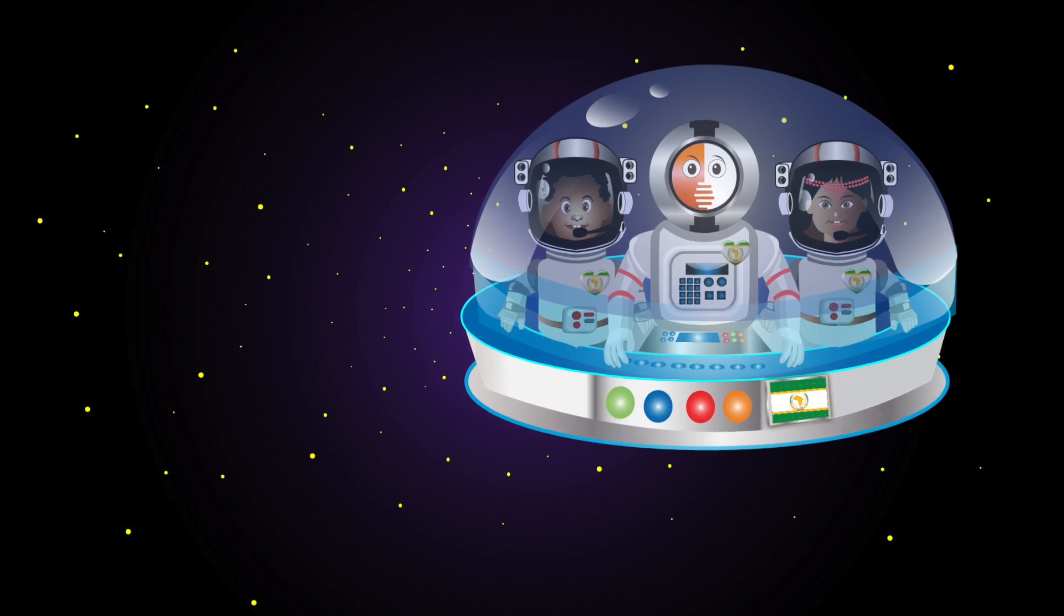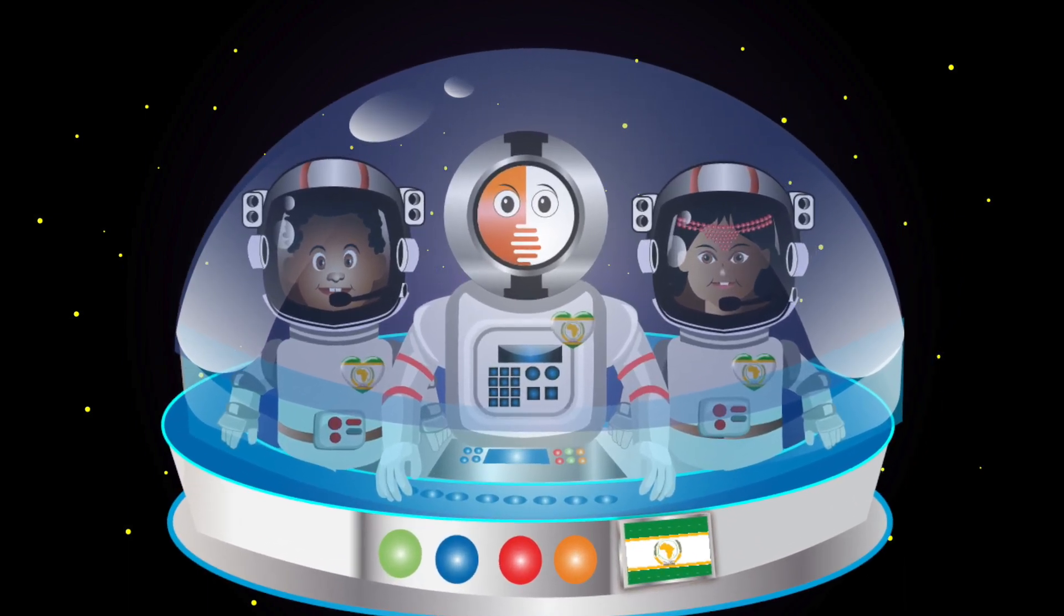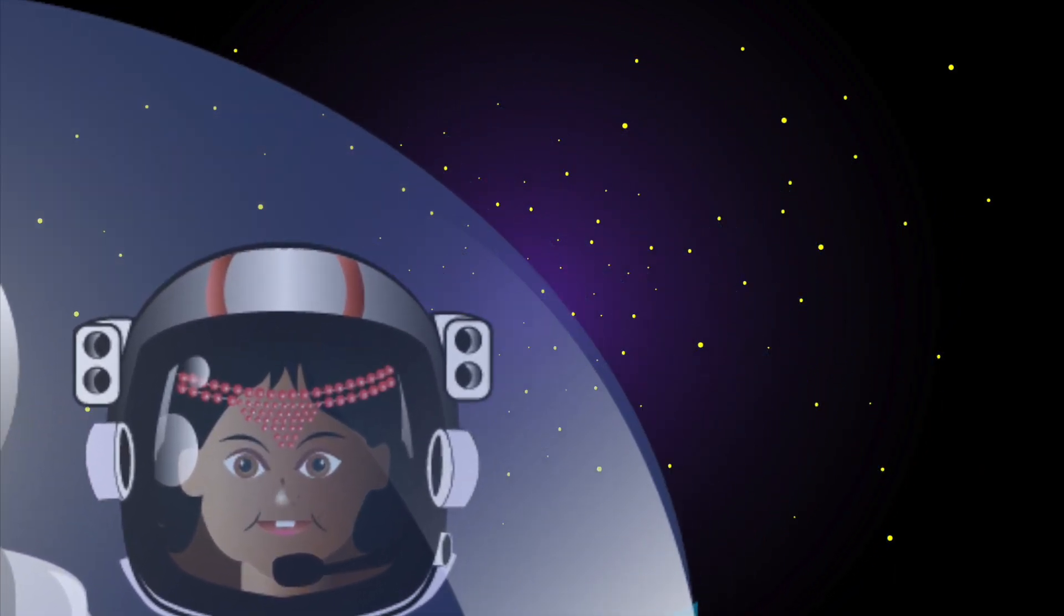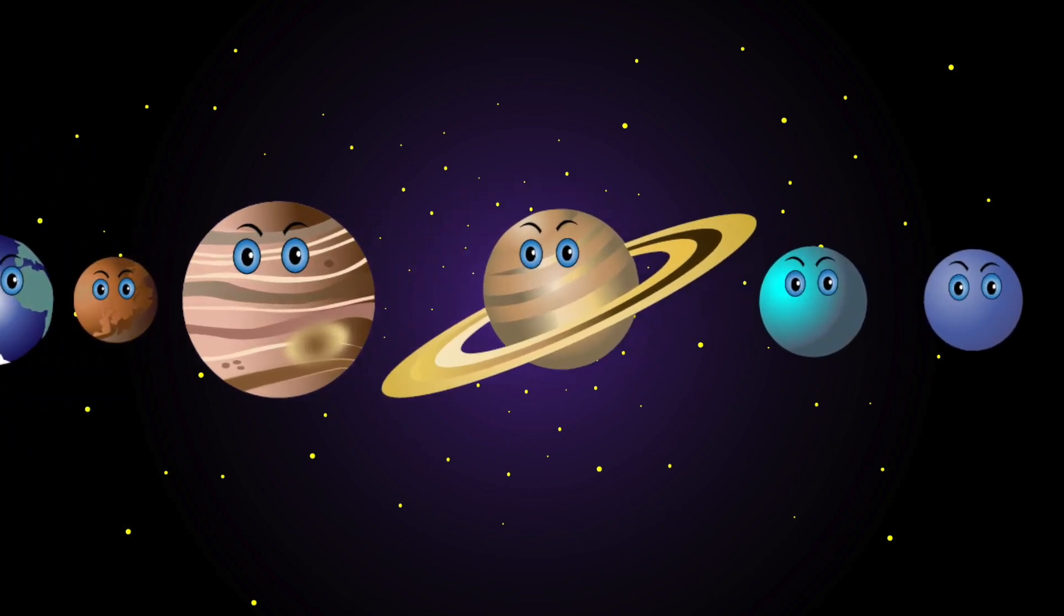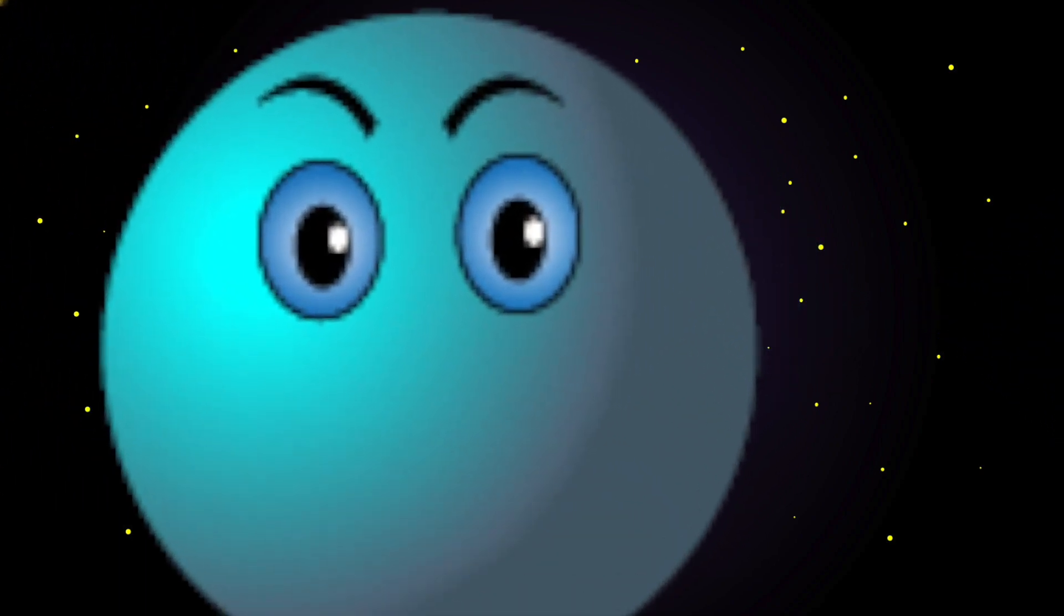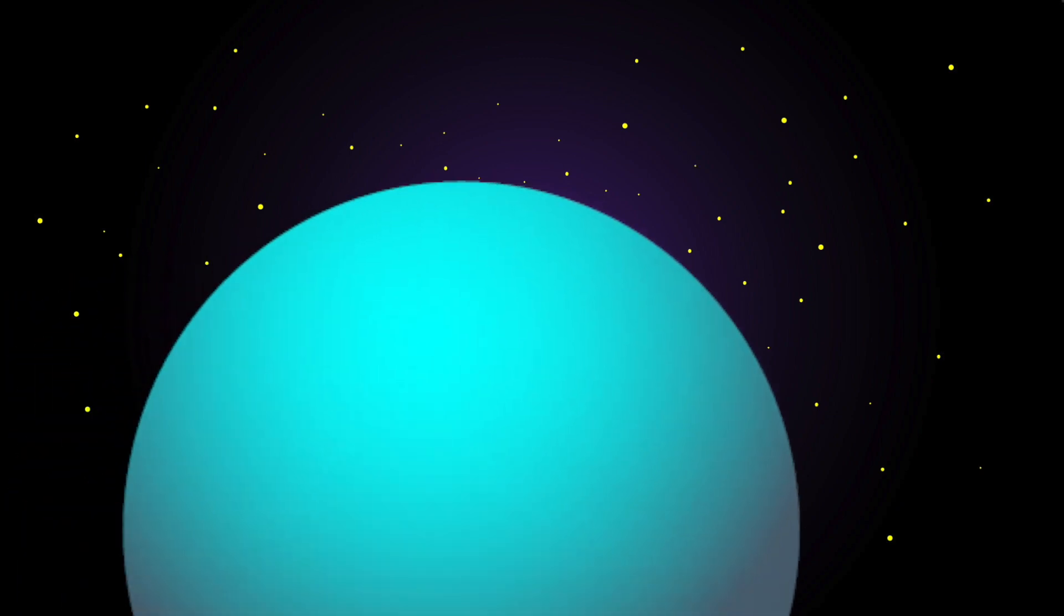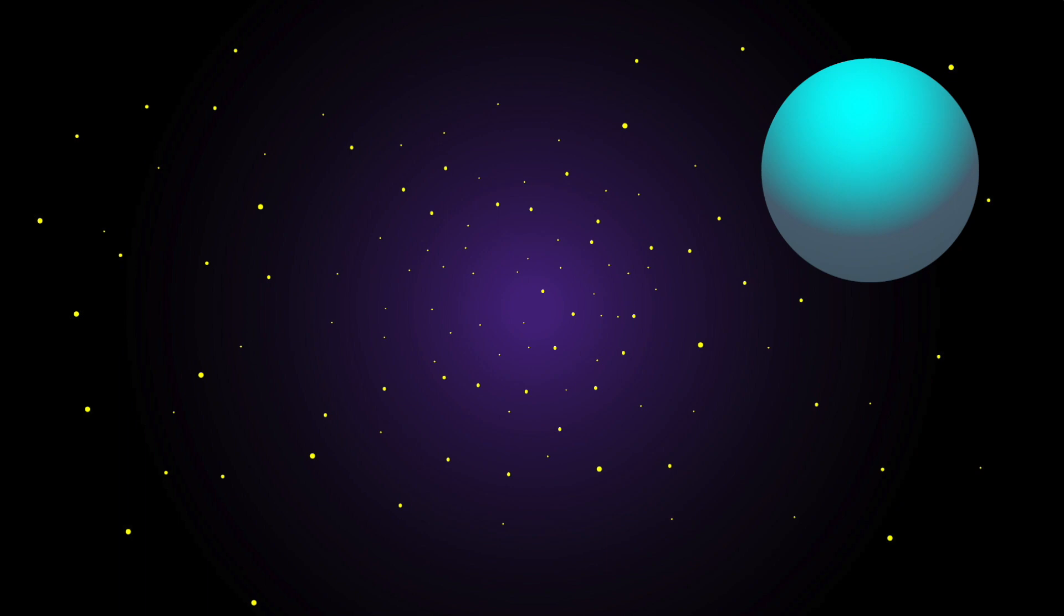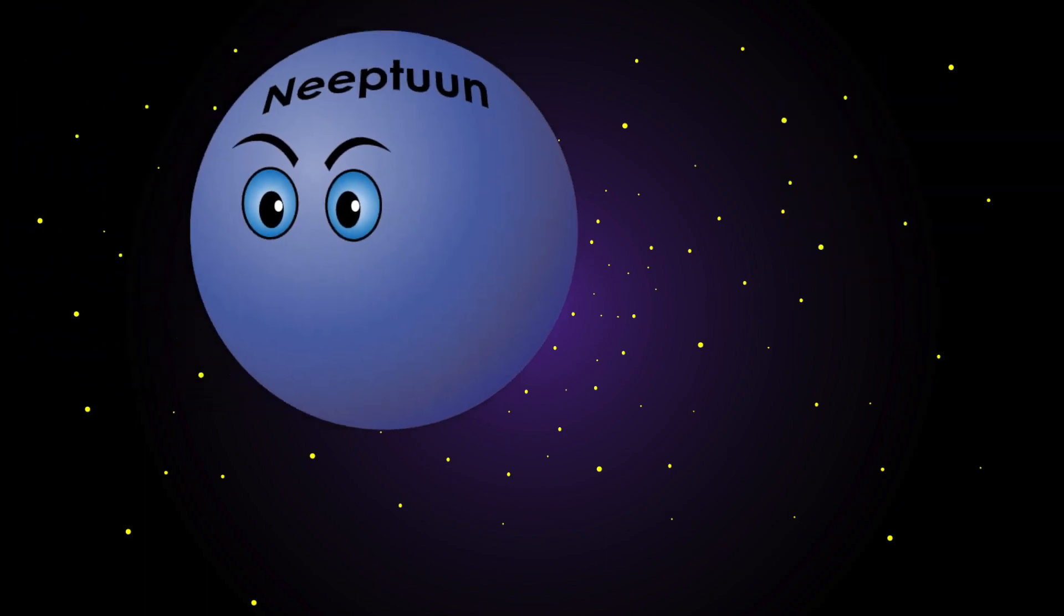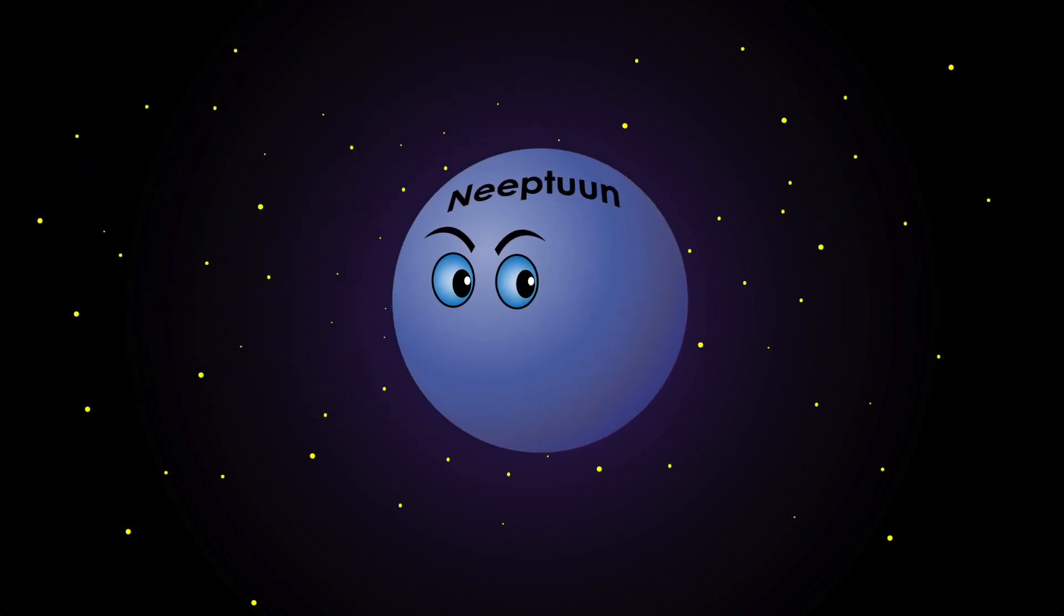Join us to learn about the different planets. Now sing along and have some fun. My name is Uranus. I am blue in color. I'm the seventh planet from the sun. Humans have named me the icy planet because I am the coldest one.